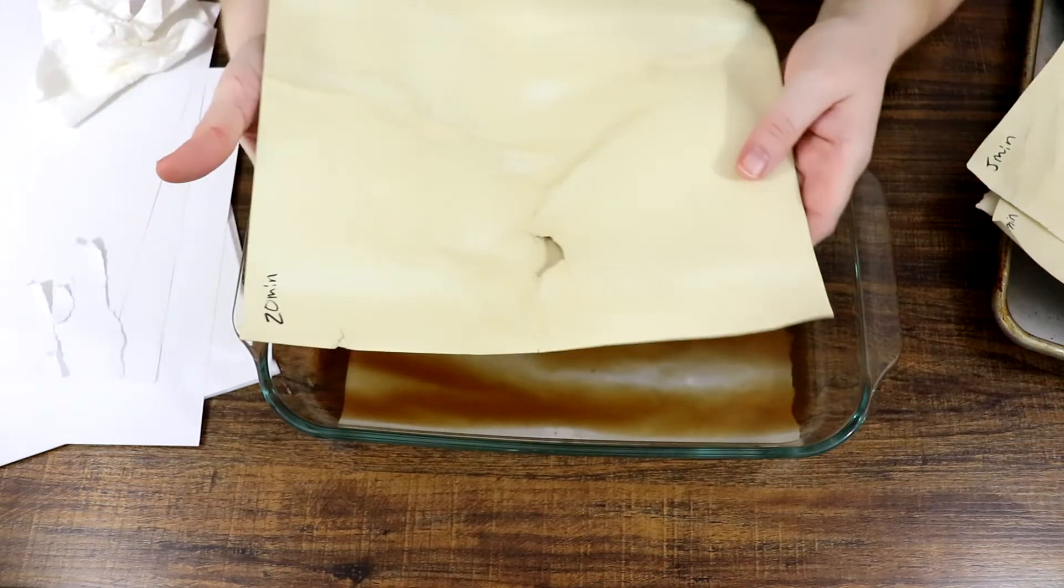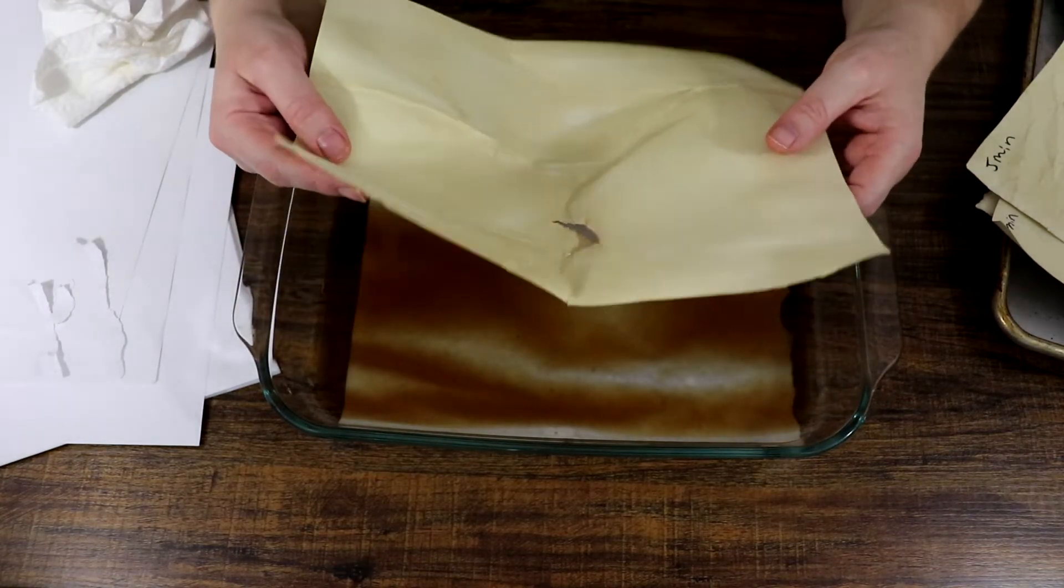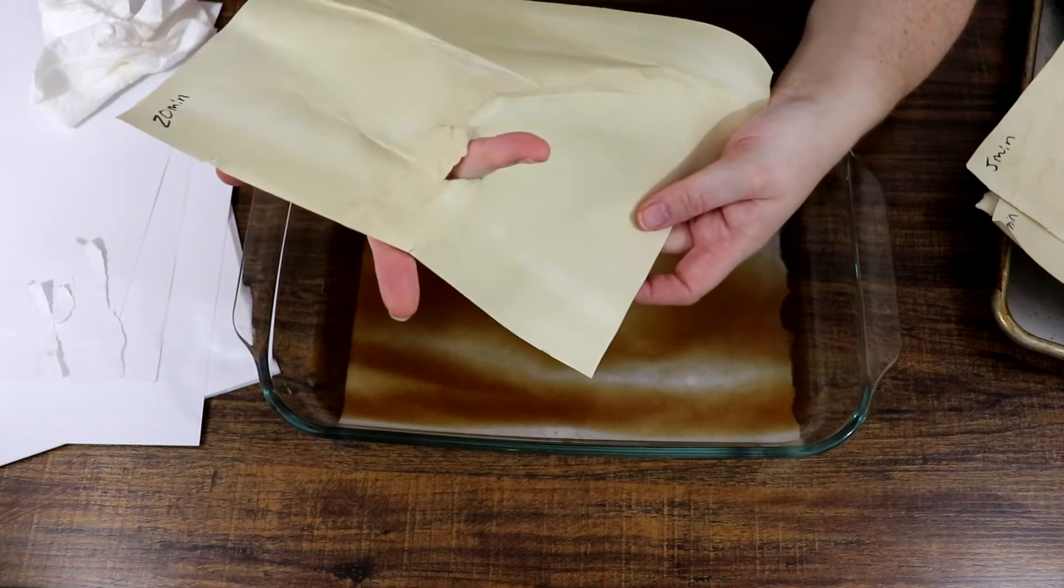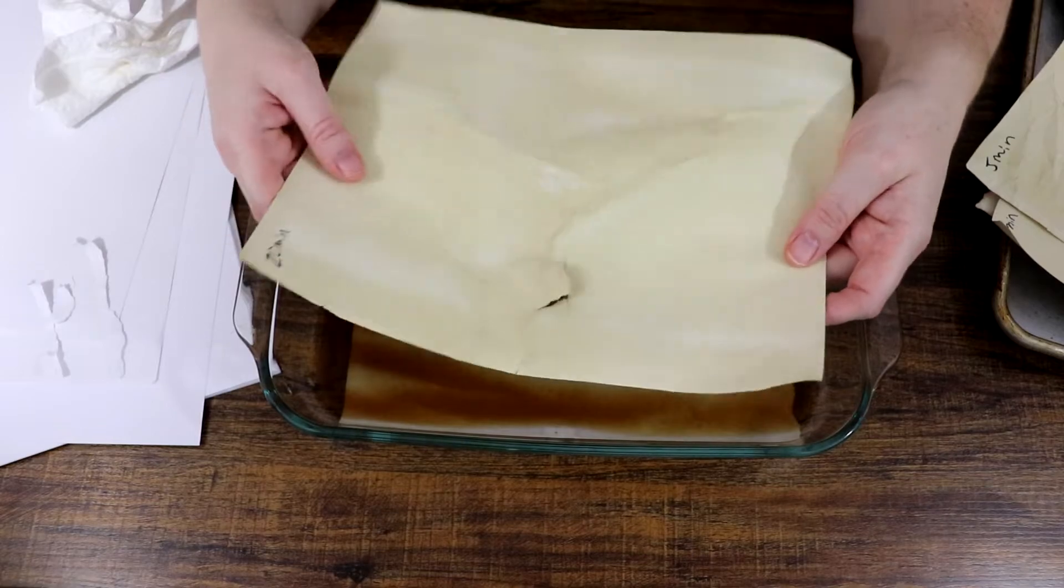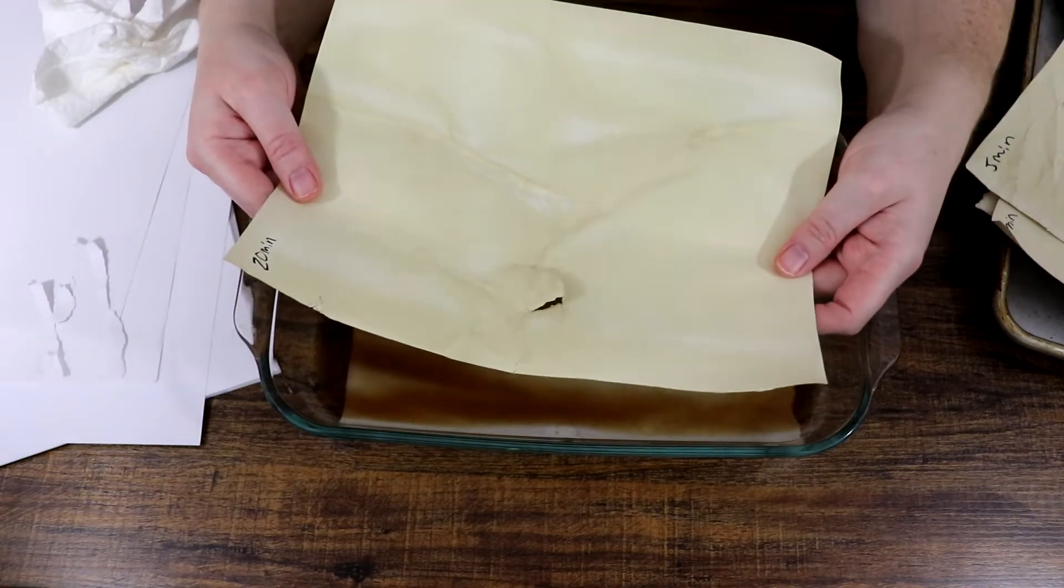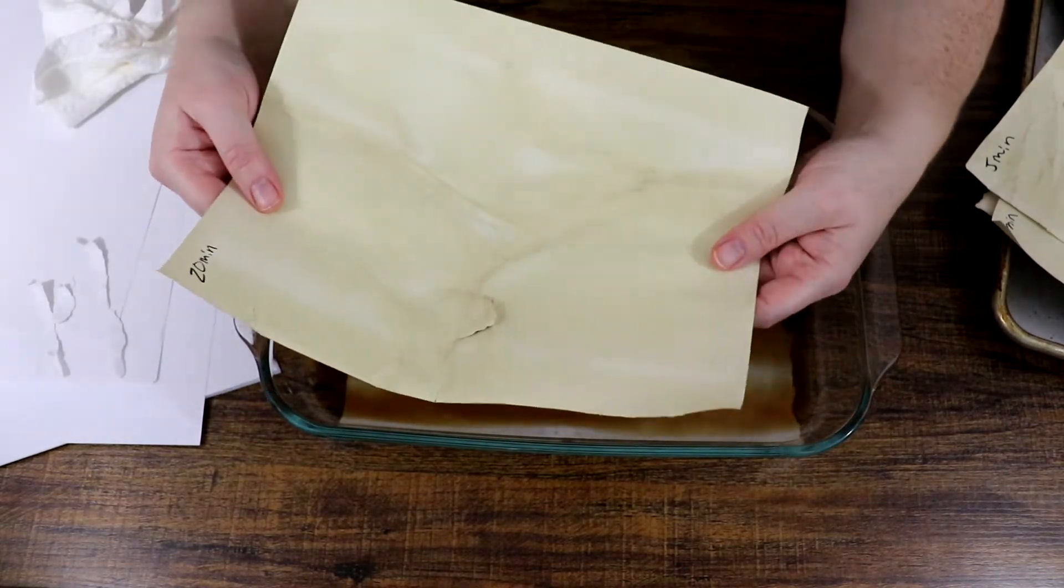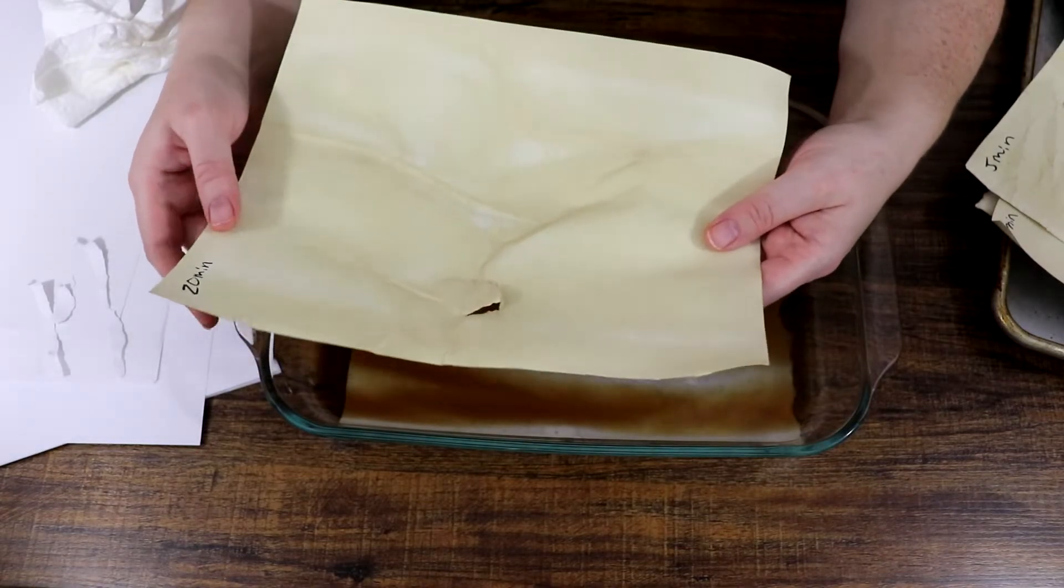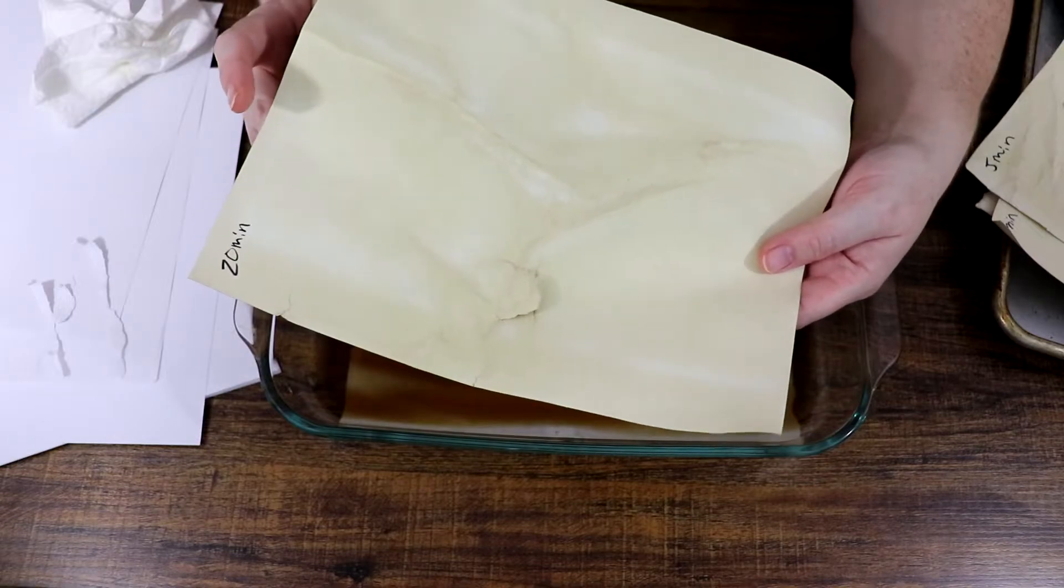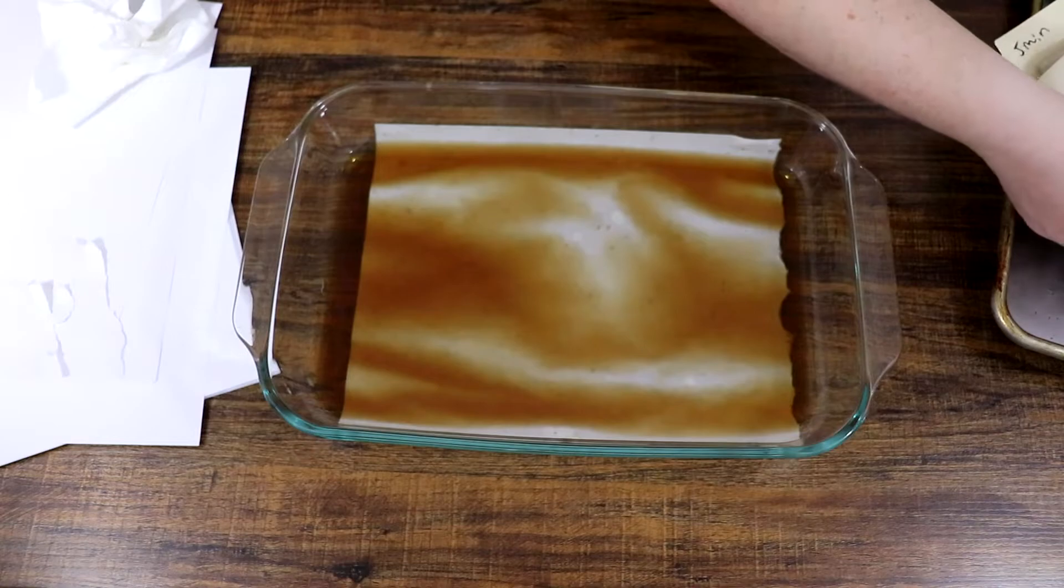And this last one here I did 20 minutes. This is the thicker paper, but you have to be very careful because as I was doing it, you know, there's a hole in it. I mean, if that's what you want and you want that to be your age, you can certainly do that. If you want to put tears in your paper at any time, I would do it while it's in the tea soaking up. But those are the color differences that you can expect.